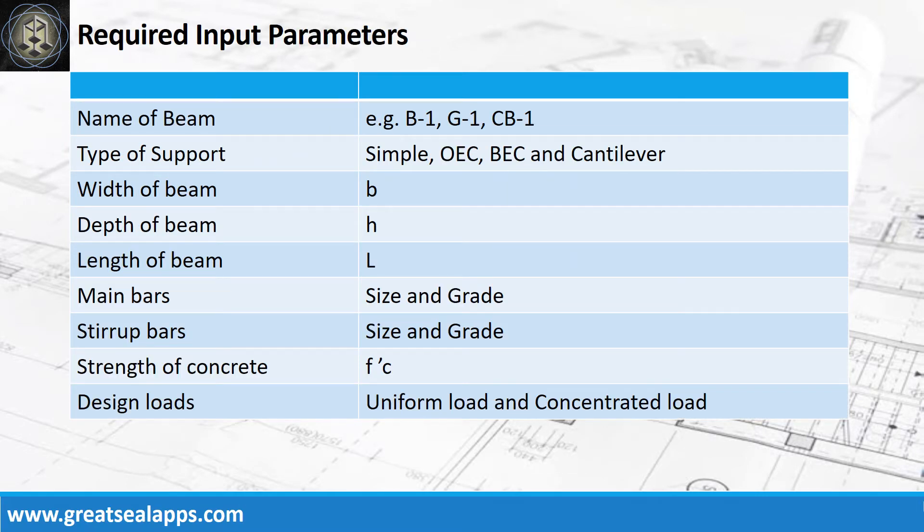Enumerate input parameters required: name of beam (e.g., B1, G1, CB1), type of support, width of beam, depth of beam, length of beam, main bars with size and grade, stirrup bars with size and grade, strength of concrete, and design loads.